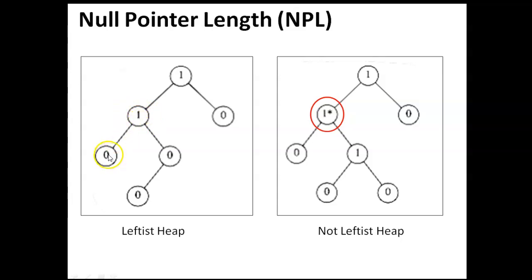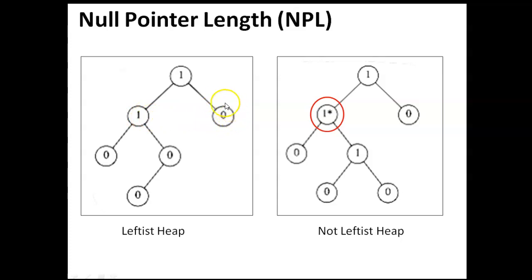We can also calculate the NPL value of a node using its subtrees: it is the minimum NPL value of its children plus 1. So for this node, both children have NPL value 0, so it takes the value 1. For the next node, it has 2 children and this is the minimum NPL value, so we do plus 1. Its NPL value is also 1.